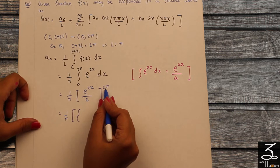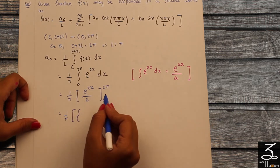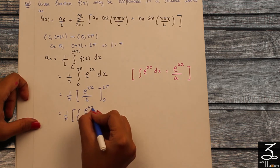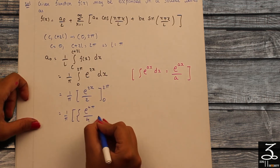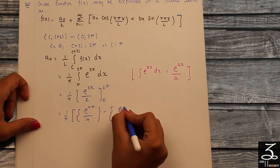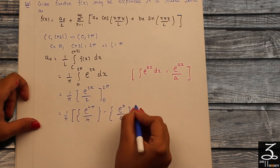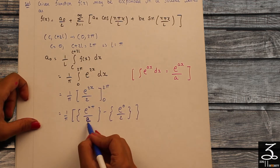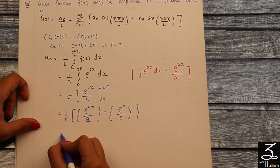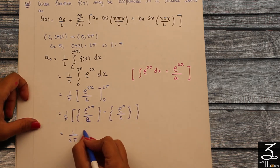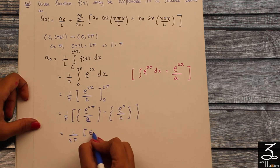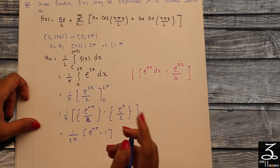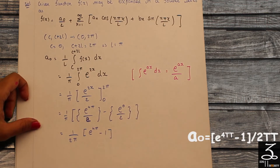Applying the limit rule — upper limit minus lower limit — substituting x=2π gives e^(4π)/2, and substituting x=0 gives e^0/2. Taking 2 common from (1/π)·(1/2), we obtain (1/2π)·[e^(4π) − 1], since e^0=1. This is the value of a0.